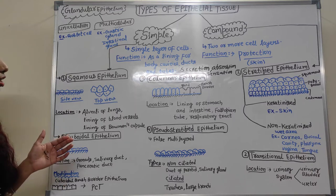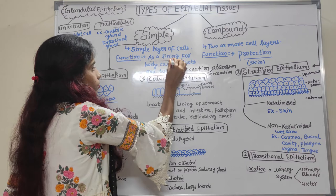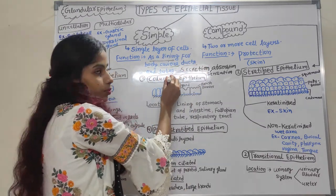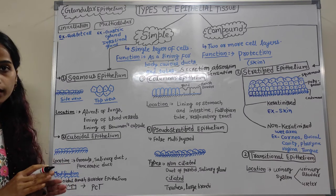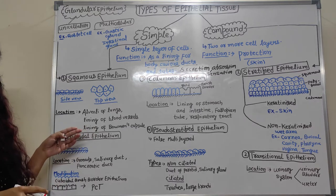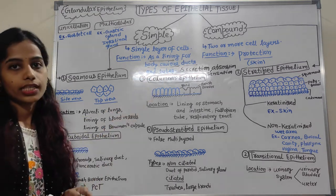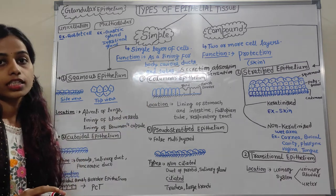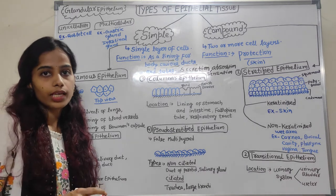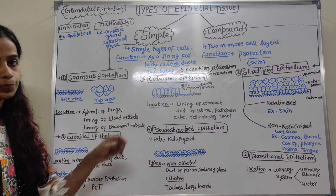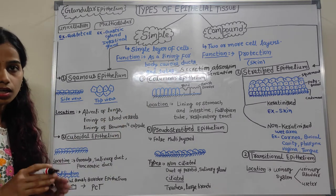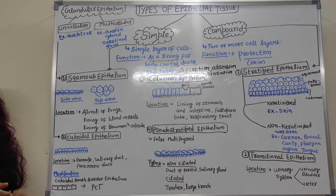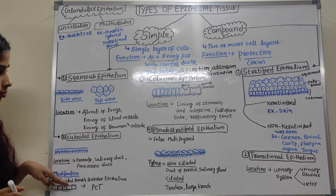Simple epithelium tissue is found as a lining for body cavities, ducts, and tubes — such as blood vessels and the wall of the heart. It is also found in body cavities with hollow-like structures, in glands (both exocrine and endocrine), and in tube-like structures such as the alimentary canal. Simple epithelium is divided into four types based on structure.